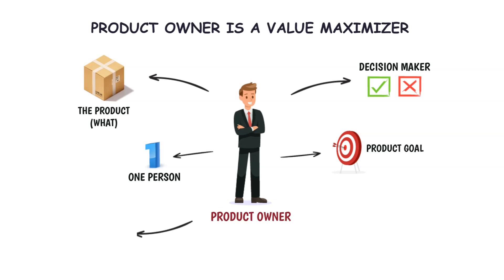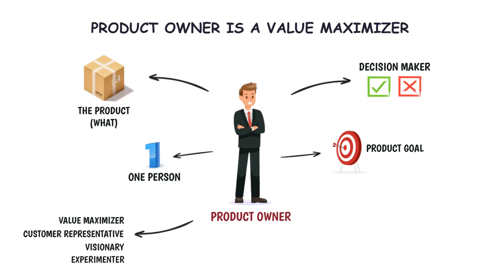Product owners wear multiple hats, such as Value Maximizer, Customer Representative, Visionary, and Experimenter. The product owner is primarily accountable for maximizing the value of work done by the Scrum team.